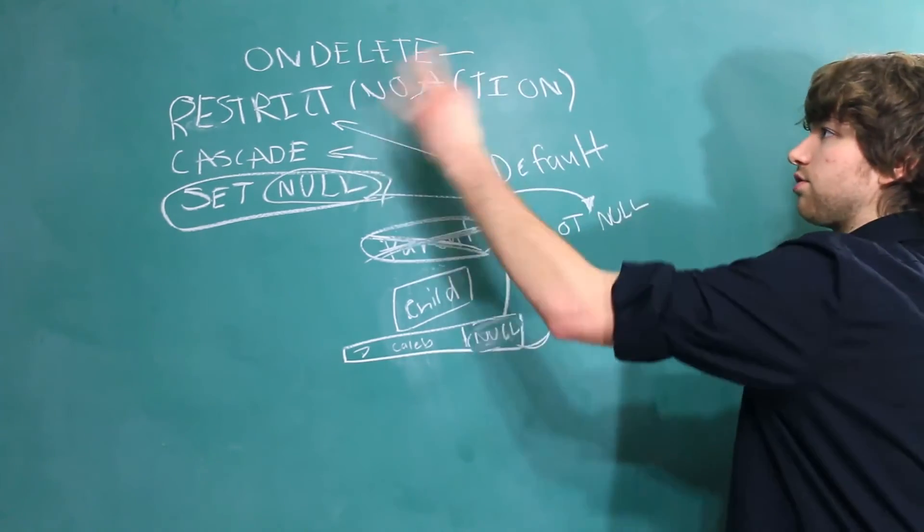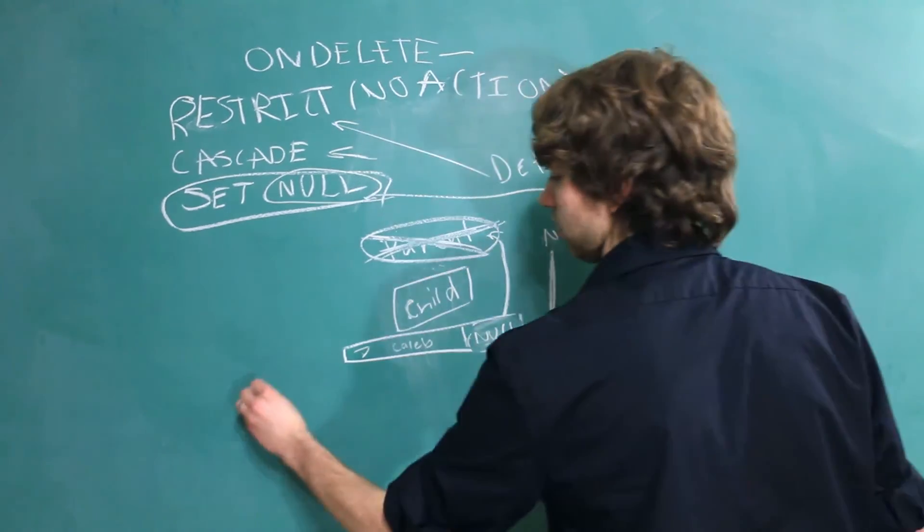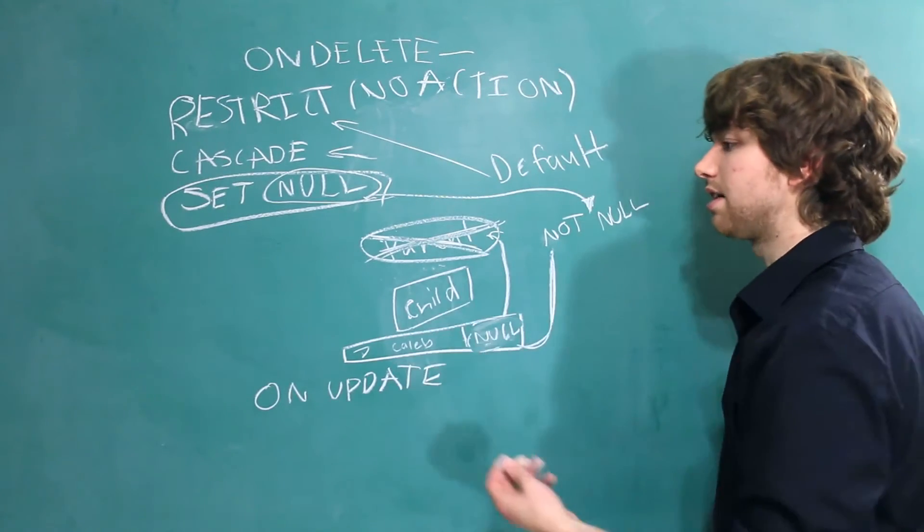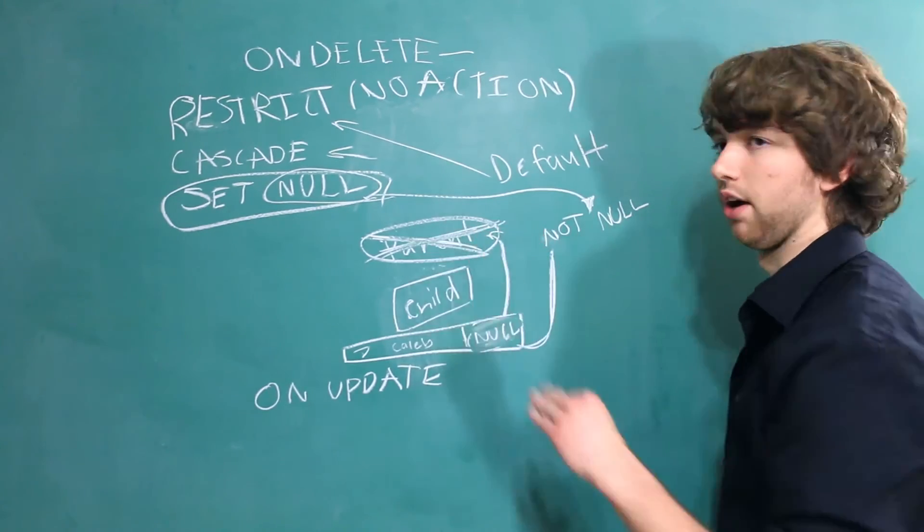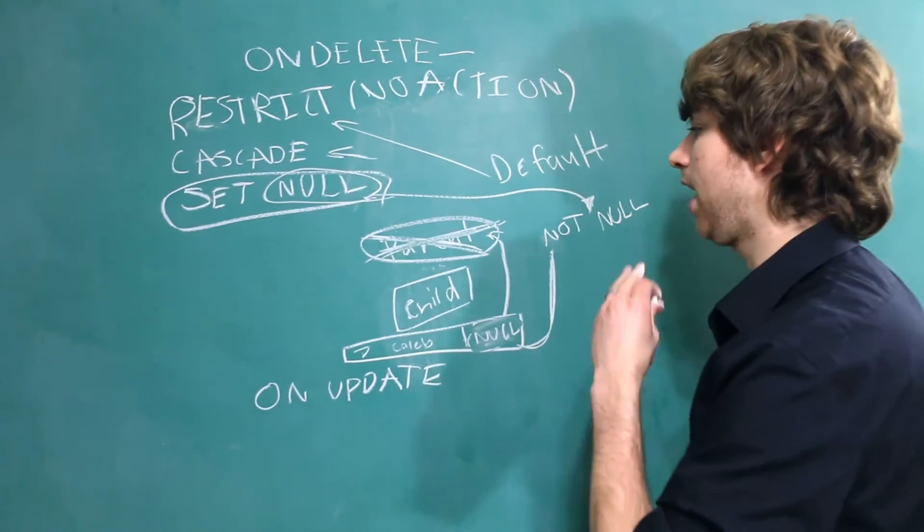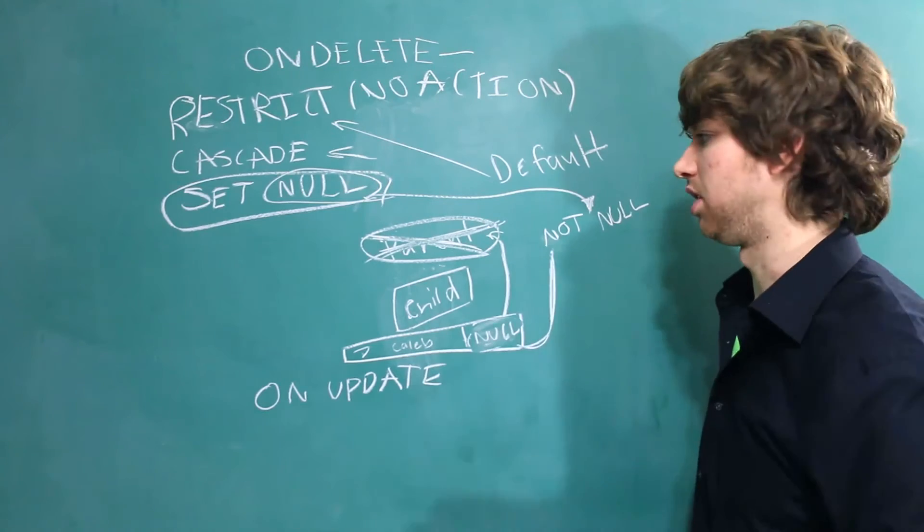And actually, there's another setting you can do, which is OnUpdate. This one is used a little bit less, but it essentially works the same way. But instead of deleting the parent, what we do is we actually change the value that's being referenced.